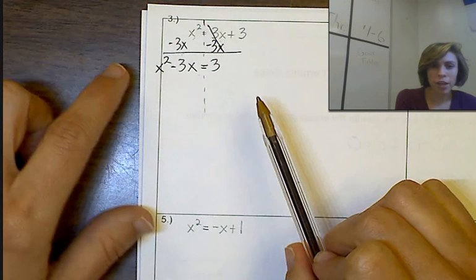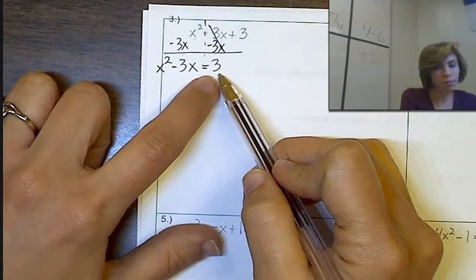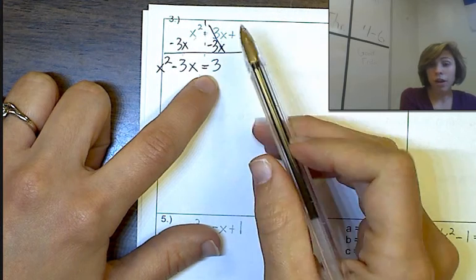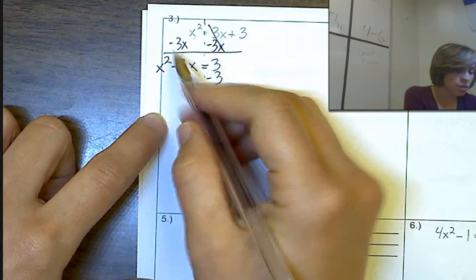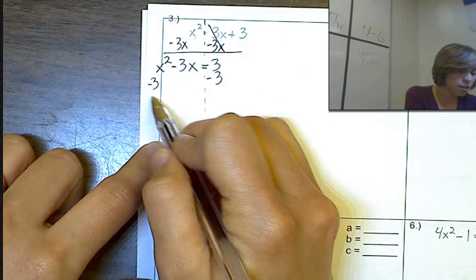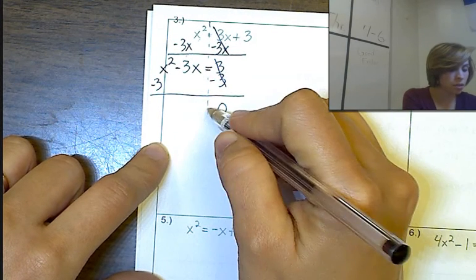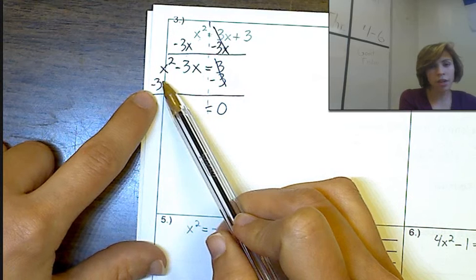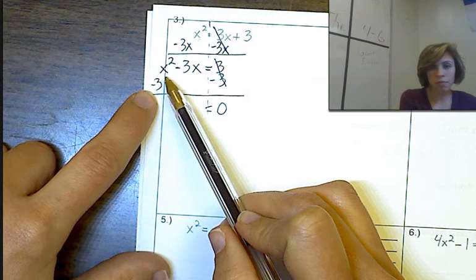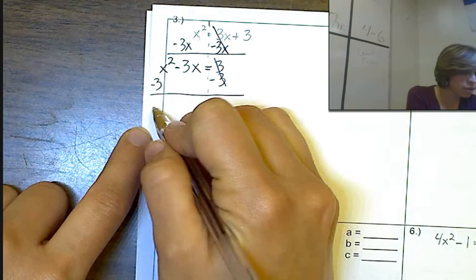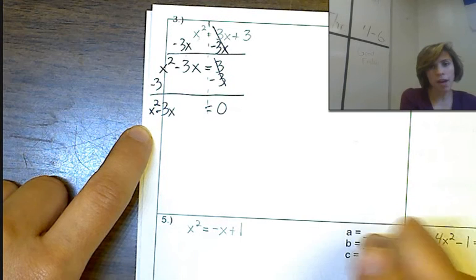So we have x squared minus 3x equals 3. So we still need to get that last term over to the other side. We have 3, so it's positive 3. The opposite of that is negative 3, which is like subtracting. We're going to subtract 3 from both sides. So 3 minus 3, that's going to cancel and be 0. And then on this side, again, we don't have any like terms. This is an x squared term, this is an x term, and this is just a number term. So again, we start with the variable with the highest power, that's x squared. So we'll put minus 3x, and then we'll finally put the number after that, which is minus 3. So you should have x squared minus 3x minus 3.